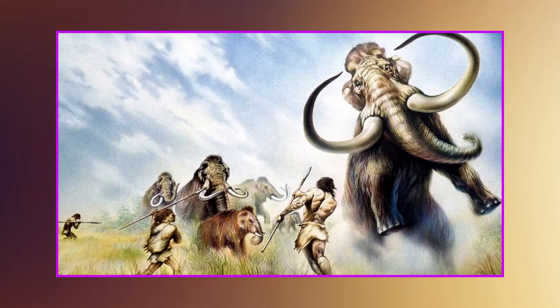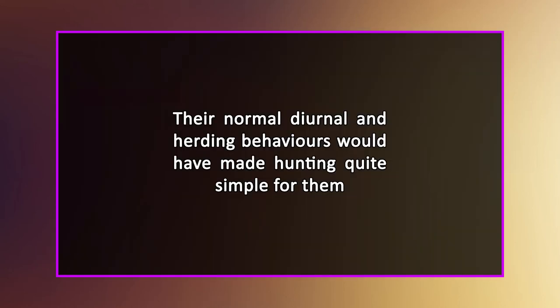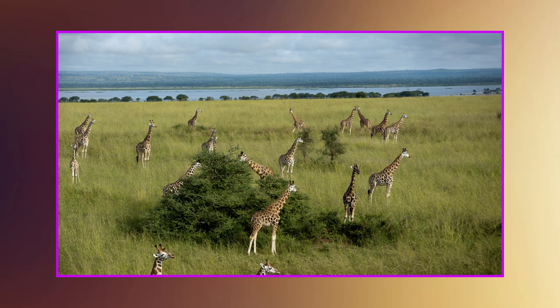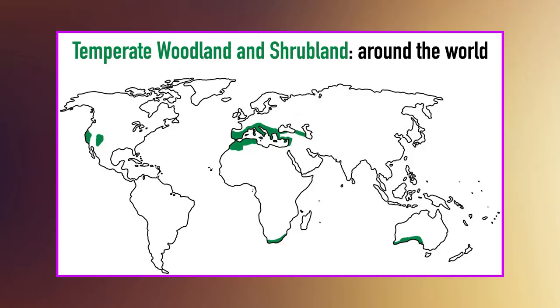These animals, like others, would have been hunted for flesh and items like hides and bones. Their natural diurnal and herding behaviors would have made hunting quite simple. Because most of these species needed open, well-watered terrain, they were likely a valuable resource worth defending against other groups of humans. There has been much discussion regarding India's shortage of grasslands. There are climatic and edaphic grasslands occurring at extremes of cold, aridity, and shallow soil. These grasslands have supported different groups of large grazing herbivores, including some endemic species.